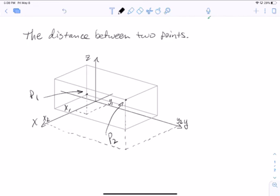Now the shadow of P1 in the xy plane is x1, y1. And P1 itself is x1, y1, z1. And again, the shadow of P2 in the xy plane is x2, y2. But P2 itself is x2, y2, z2.